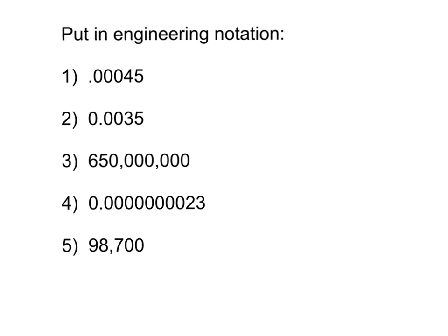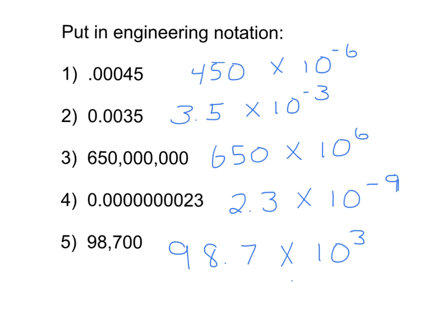Pause the video one more time and put these five numbers in engineering notation. Remember that the exponent needs to be a multiple of three. Here are these five numbers written in engineering notation. If you are not getting these right, please go back and rewatch the video on scientific and engineering notation, and or come and see your instructor for extra help.